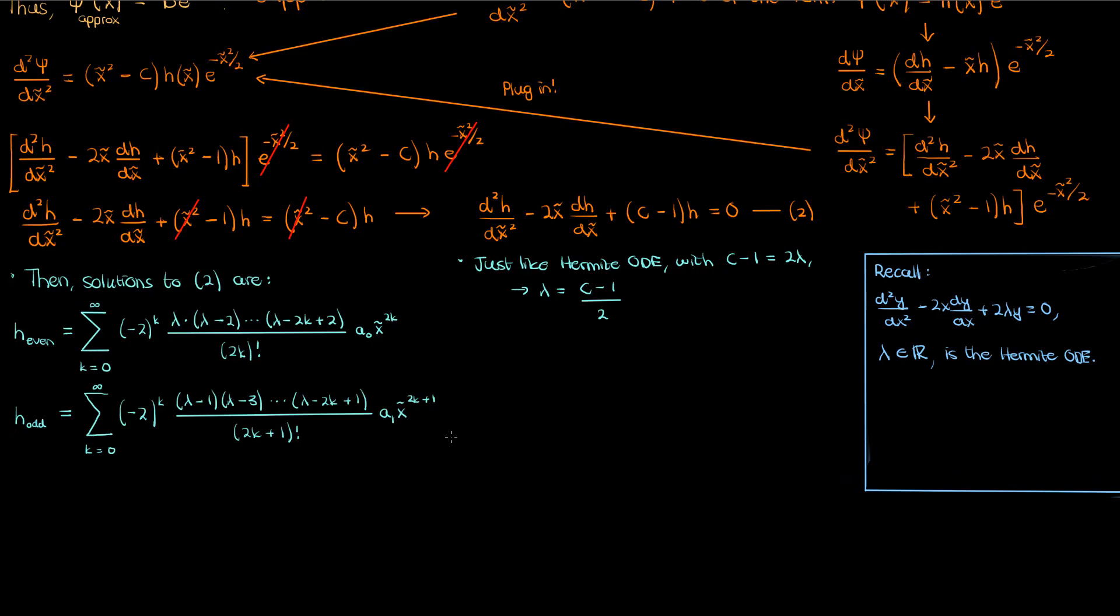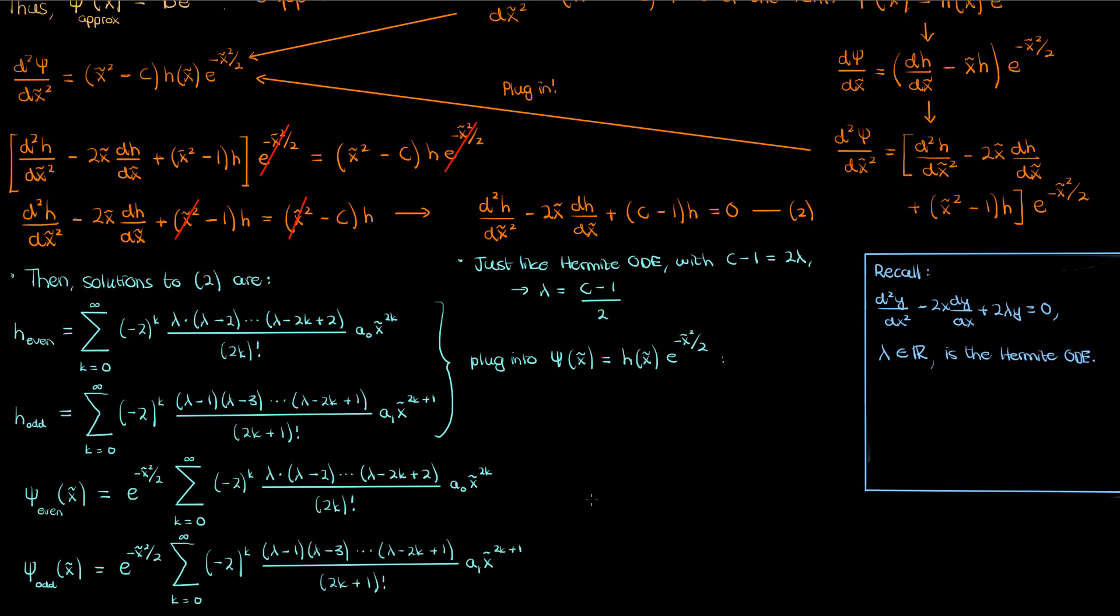Now let's take these two solutions h_odd and h_even and let's plug them into ψ of x tilde, which if you recall is given by this equation. Plugging h_odd and h_even into ψ will give us two separate solutions for the wave function ψ, one corresponding to h_even and the other corresponding to h_odd.